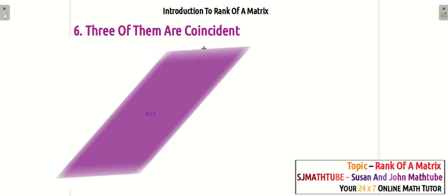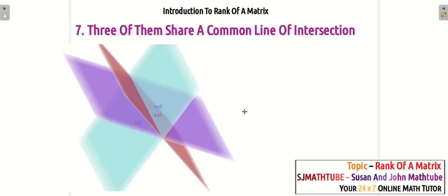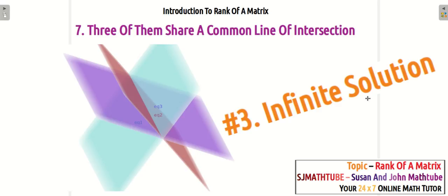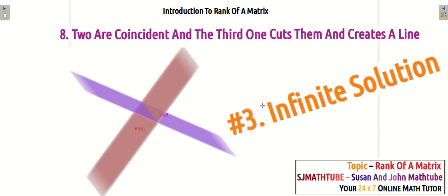Now, imagine all three planes are coincident — that means there are an infinite number of common points. All the points in the plane are common, meaning infinite solution. Or, the three planes create one common line of intersection — all those points are common, so again infinite solution. Similarly, two planes are coincident and the third one cuts through them — a line will be formed, and hence infinite solution.